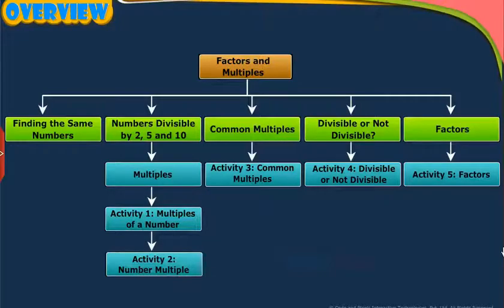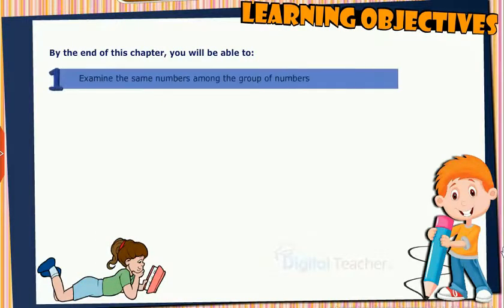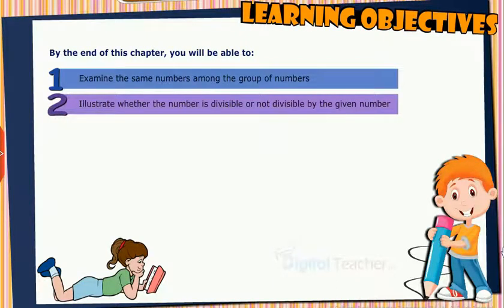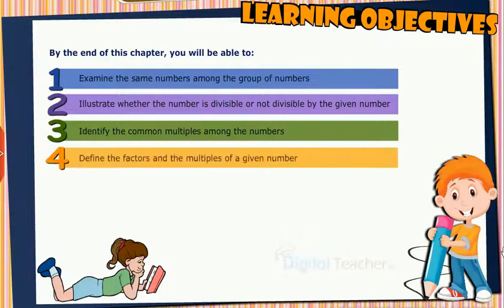This slide presents the overview of the chapter. Learning Objectives: By the end of this chapter, you will be able to examine the same numbers among a group of numbers, illustrate whether a number is divisible or not divisible by a given number, identify the common multiples among numbers, and define the factors and multiples of a given number.